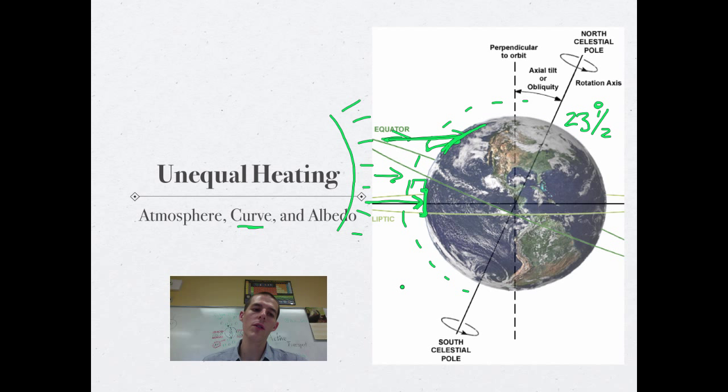Also, the curve of the earth is important because at the equator, the solar energy that's coming in is going to hit the earth straight on and it's not going to spread out very much. It's like putting a magnifying glass over an ant in the sun and concentrating the solar energy. At the poles, as the sunlight comes in, it's going to hit the surface and spread out, which causes less heating.